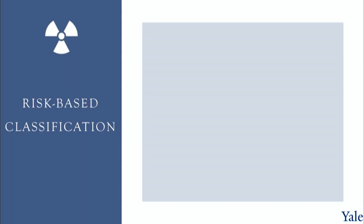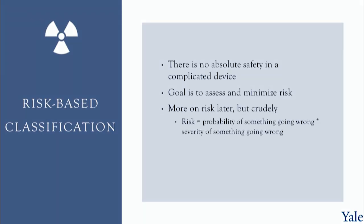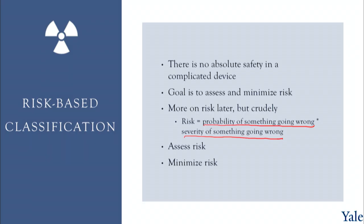We're going to look at risk-based classification. First, an acknowledgement that there's no such thing as absolute safety in any complicated device — the goal is to assess and minimize risk at all points. Risk is a combination of the probability of something going wrong and the severity of that outcome. If something is highly likely and the outcome is very bad, it's high risk. As those two factors decrease, we go to medium risk, low risk, and so on. The risk level defines which class a device falls into.